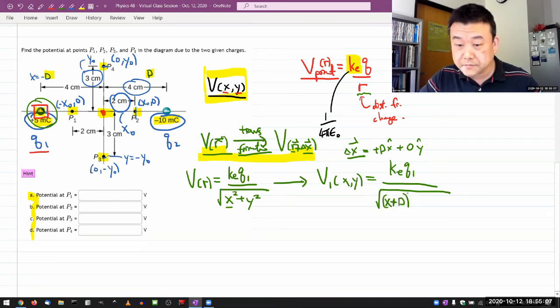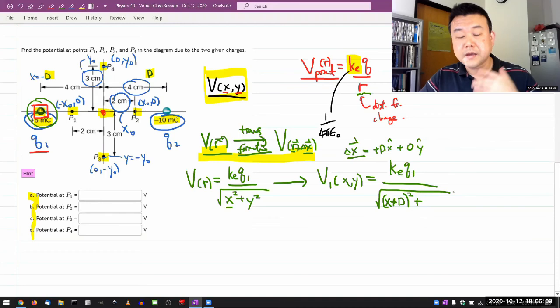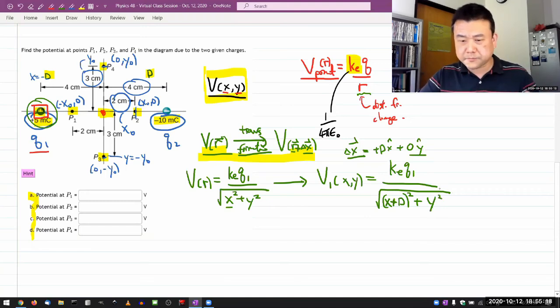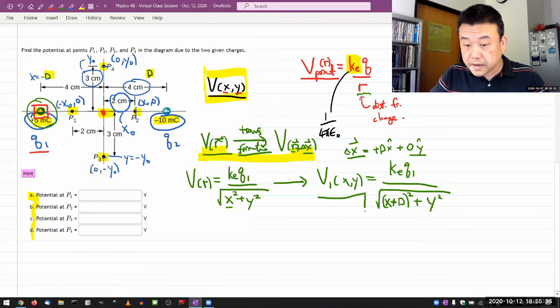So x plus d squared plus, and y would, oh y wouldn't be, y would be unchanged, yeah. It would be unchanged, so y would be just y squared. Okay, let me just do a spot check. If I plug in x equals minus d and y equals 0, it should be blowing up. And it does. Minus d plus d, 0, 0, this thing is blowing up. So I think I'm good there. So this is the electric potential due to the charge q1.